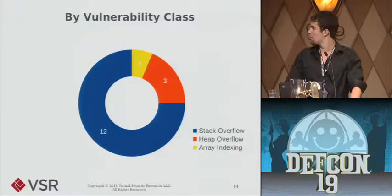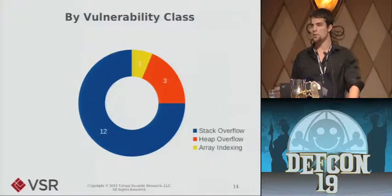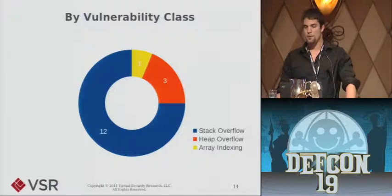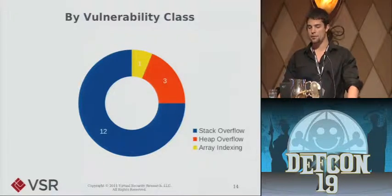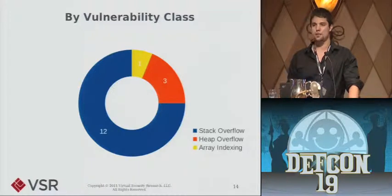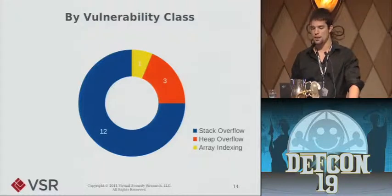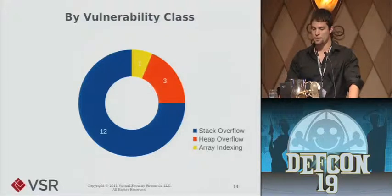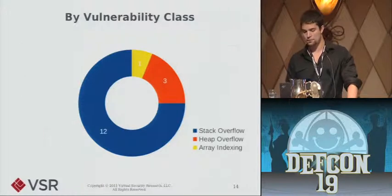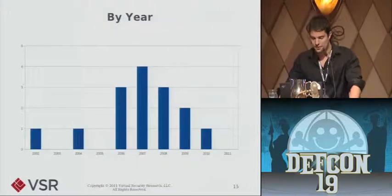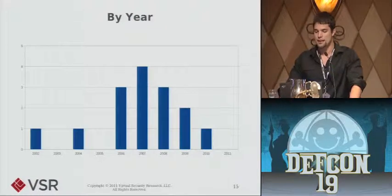Breaking these down by vulnerability class: a full three-quarters — 12 of the 16 — were typical stack overflows. I think this is because these vulnerabilities are incredibly conducive to exploitation; they're very well understood and the steps for exploiting them are known. Three of these vulnerabilities were heap overflows, which are frequently much more difficult. And one — a Windows SMB issue — is actually an array indexing issue. I'm not sure there's enough data to draw meaningful conclusions about trends here, but 2007 was a busy year for kernel exploitation.